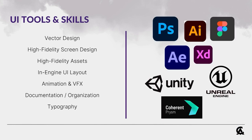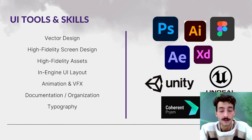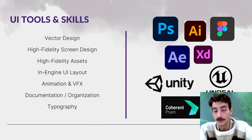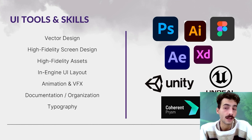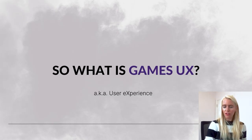Typography is incredibly important because half of the user interface is text — you need to know how to present readable text and pair fonts. And please, whenever you start designing UI, make sure your text is big enough so people can read it regardless of monitor size. For tools, the Adobe Creative Suite — Photoshop, Illustrator, After Effects — plus Figma or Adobe XD for prototyping, and engines like Unity or Unreal, or proprietary engine UI tools like Coherent Prism.